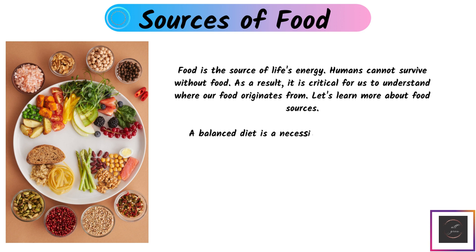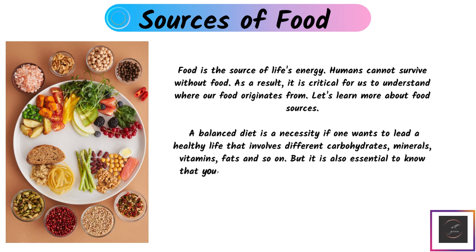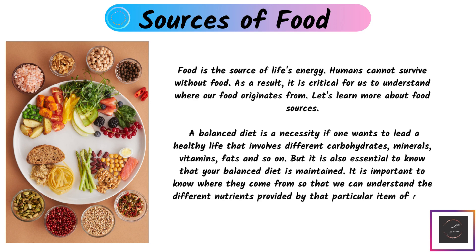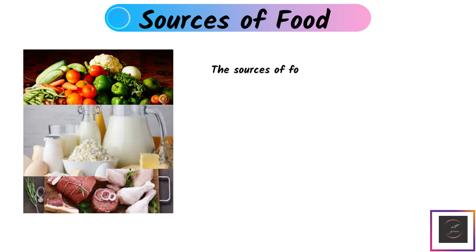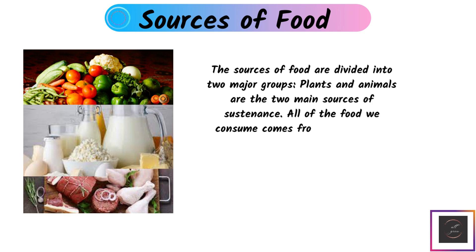A balanced diet is a necessity if one wants to lead a healthy life. That involves different carbohydrates, vitamins, minerals, fat, and so on. It is also essential to know that your balanced diet is maintained. The sources of food are divided into two major groups: plants and animals are the two main sources of sustenance, and all of the food we consume comes from one of these two sources.